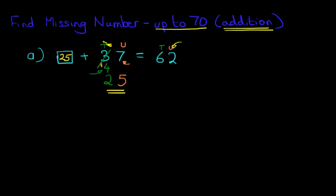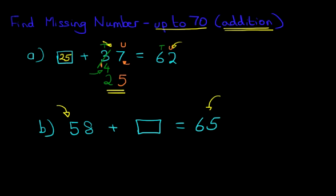Let's have a look at our second example. This is a very useful method if you learn this well for when you are doing mental arithmetic. This time we have 58 plus something equals 65. Now, this is actually quite an easy question to work through. But let's use the same method we've used in example A.